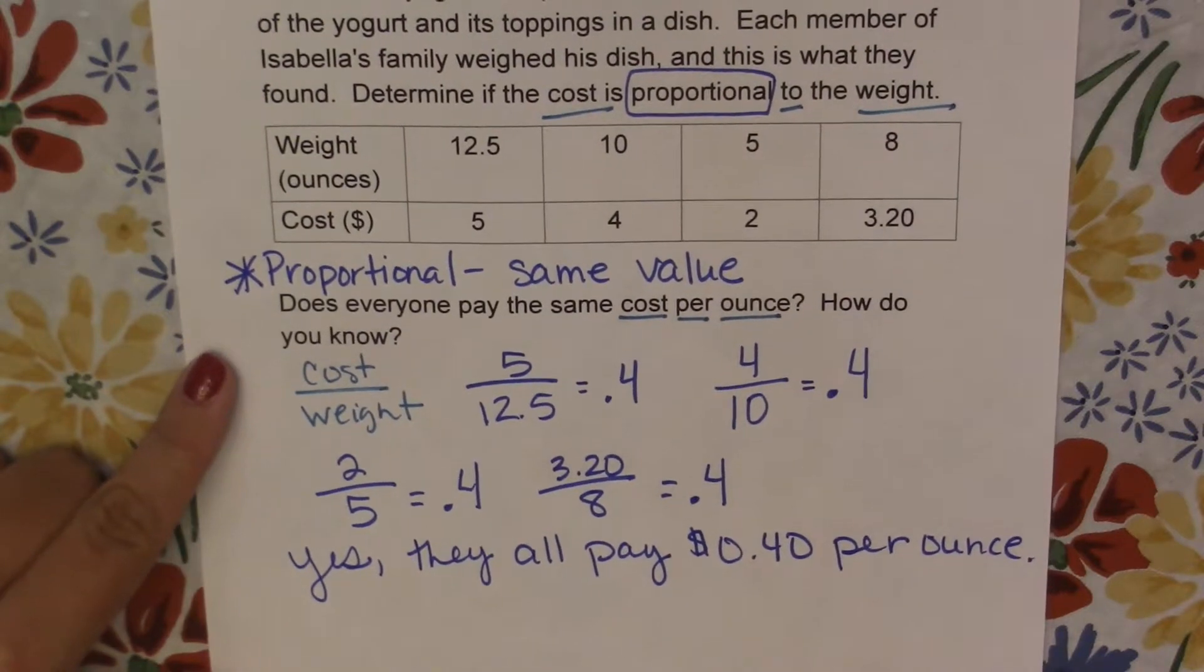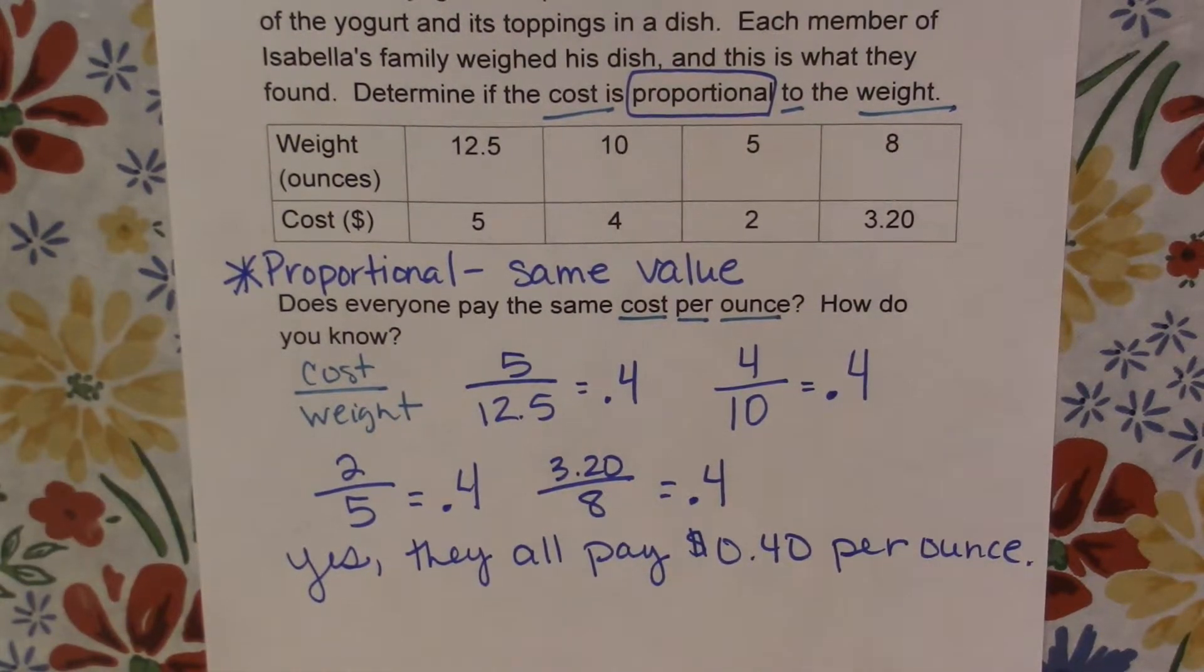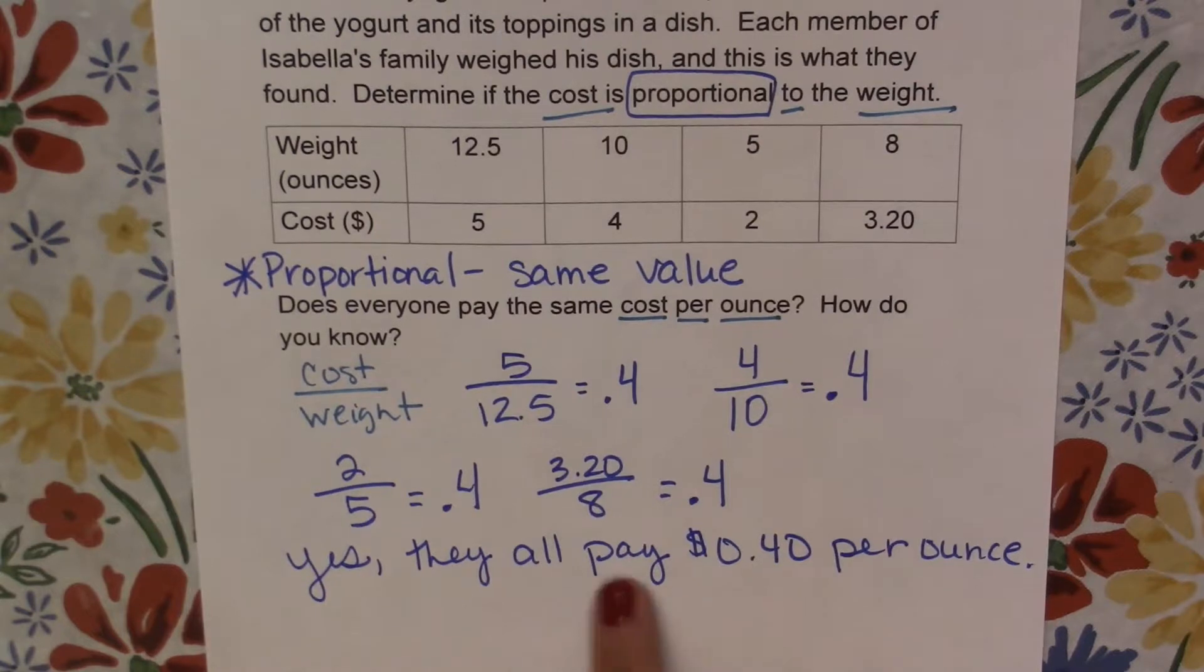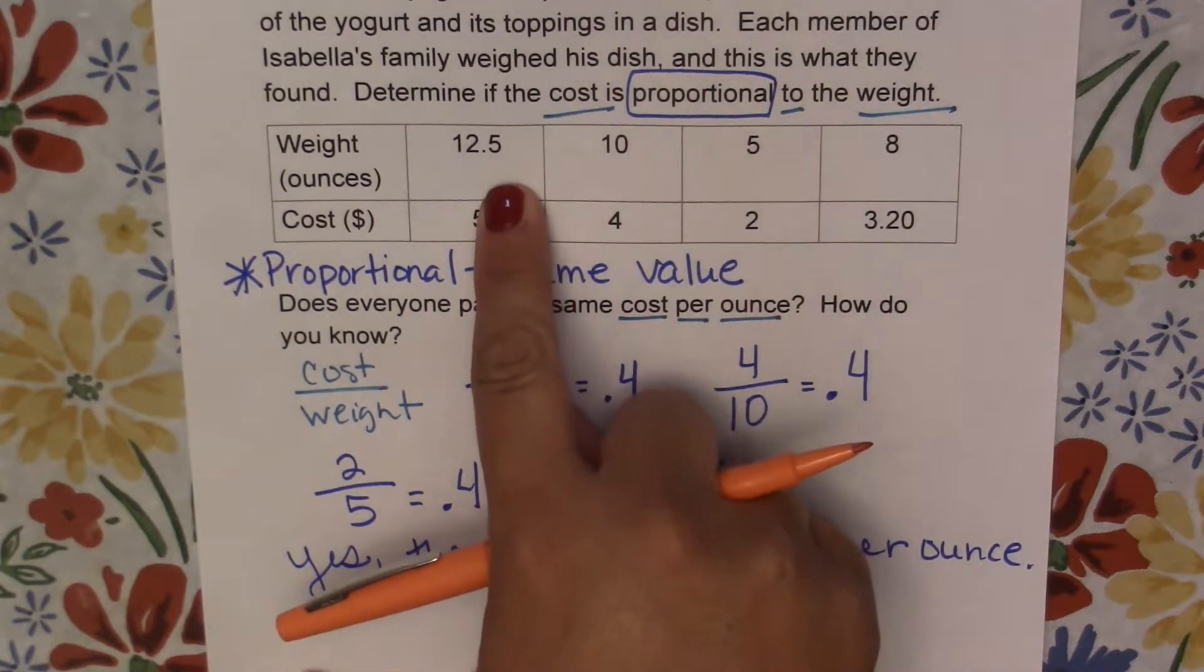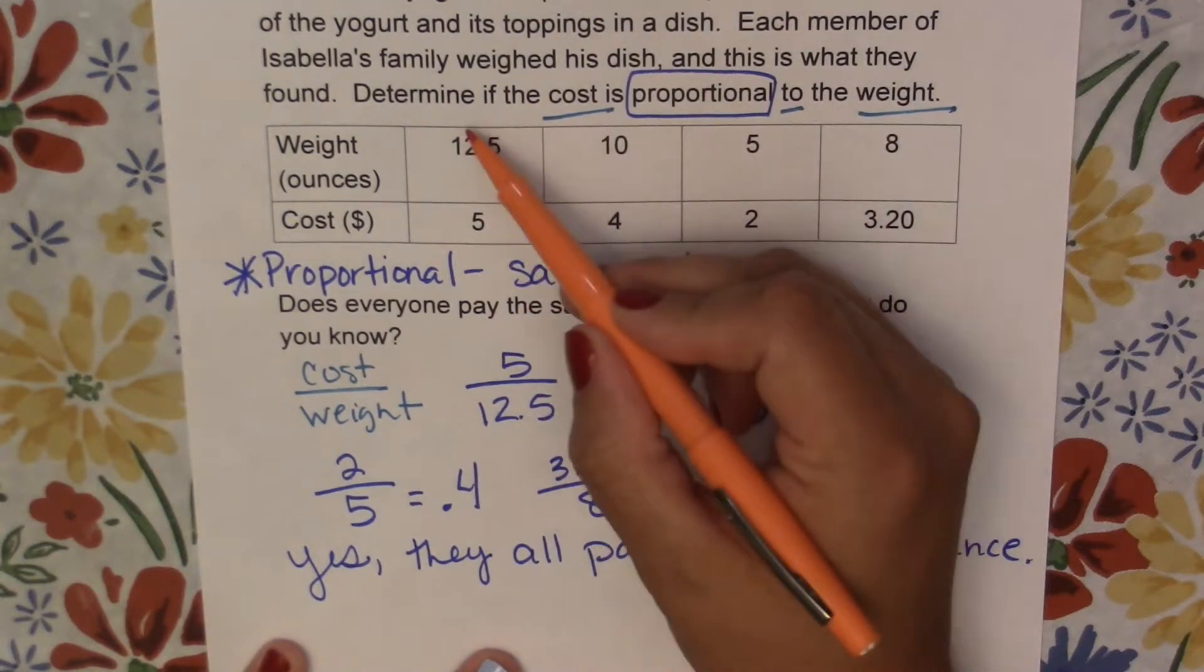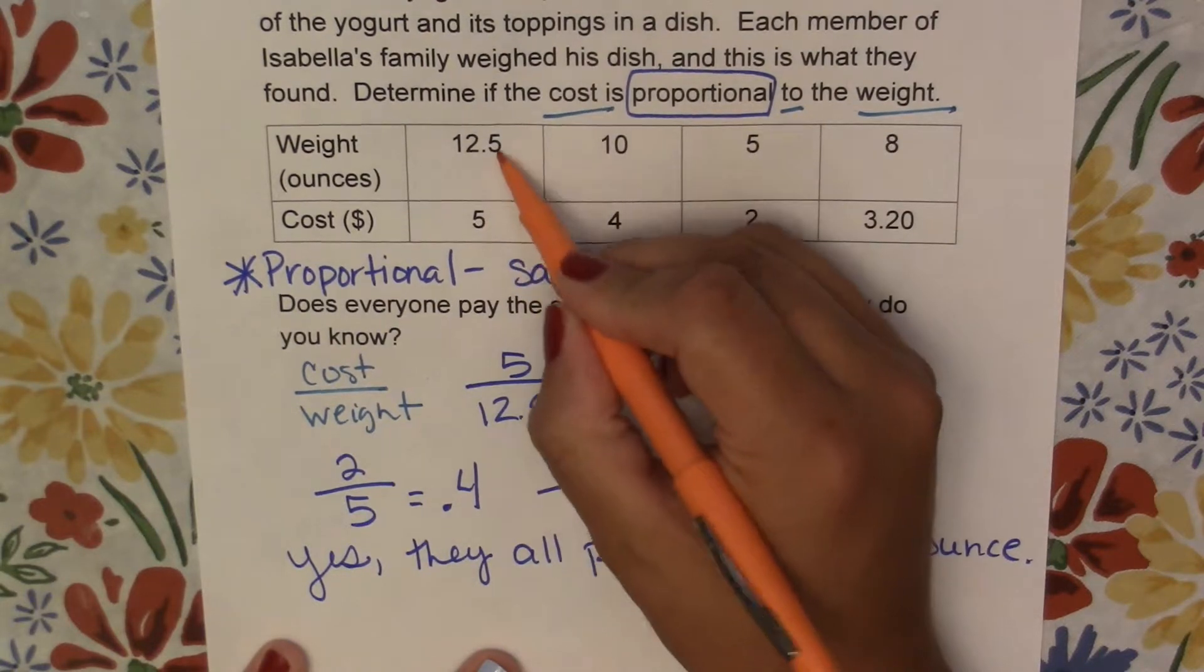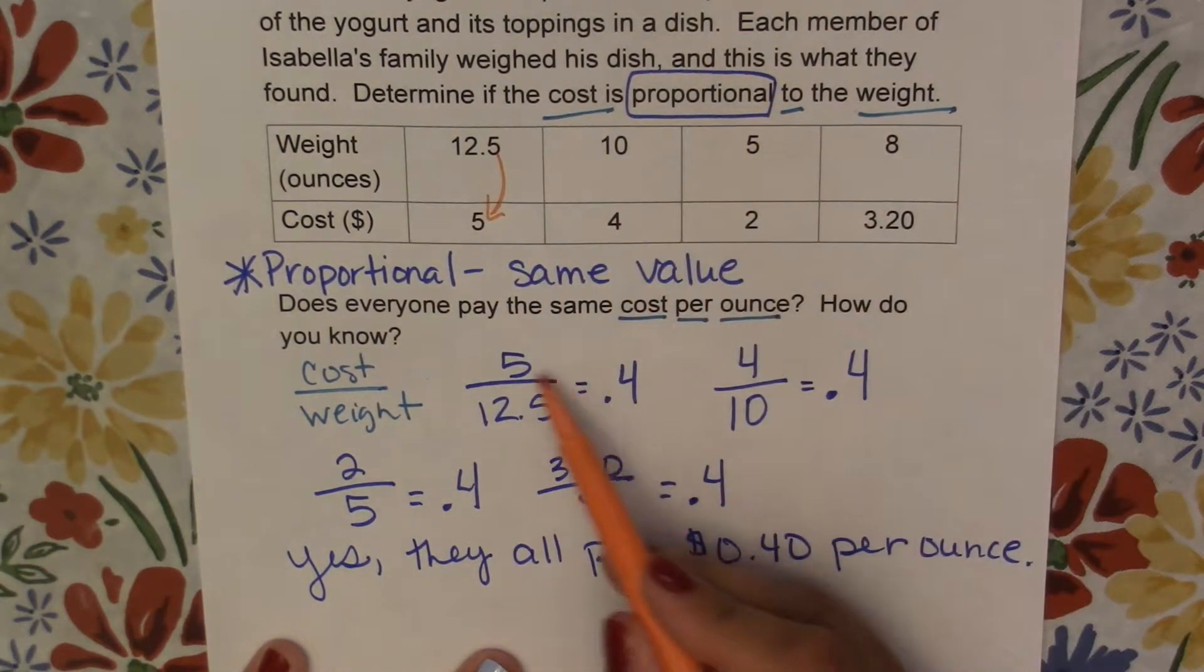Alright, so now we're going to use this example and point out a couple of other things. Let's get to some more algebraic things that we're going to be looking at when we're talking about this amount that they all pay per ounce. So if we go back up here to the table, if we were to take their weight, so how much they measure it as, and we were to times it by 0.4, we would end up with a cost of 5. So really we're doing this same thing, but a little bit backwards.